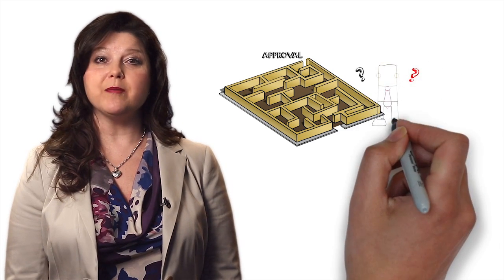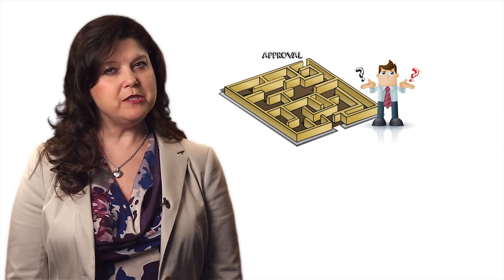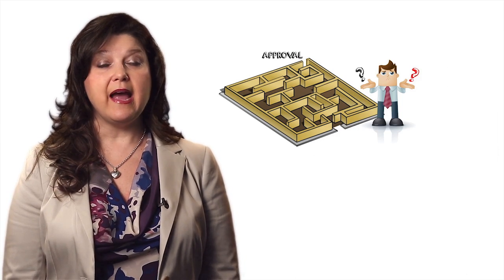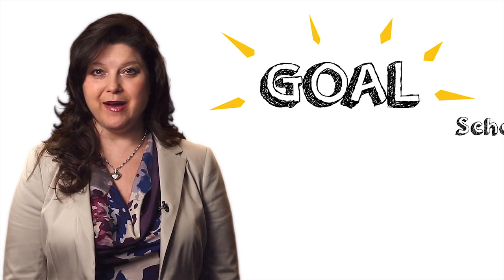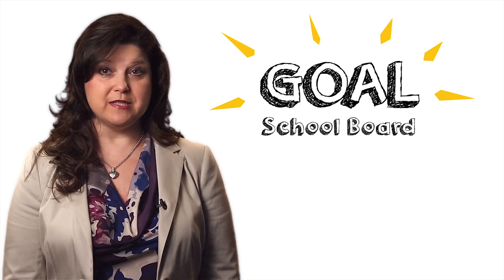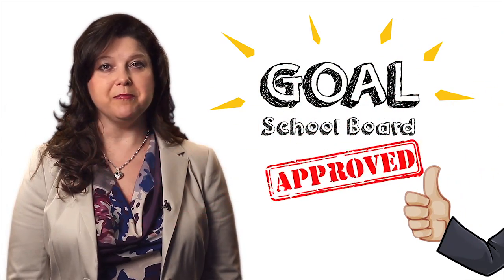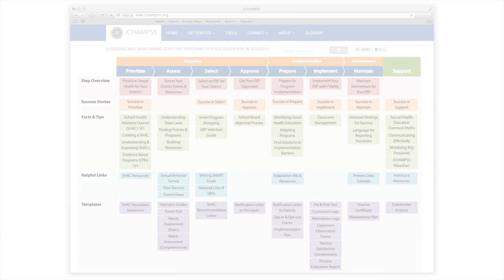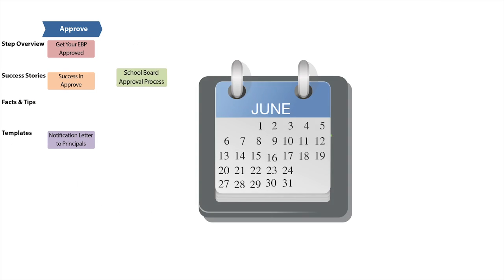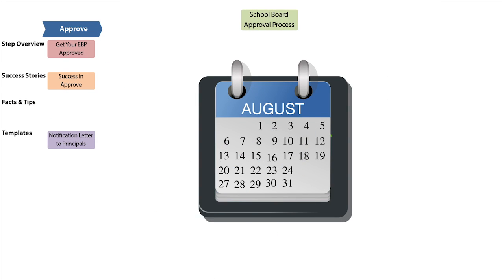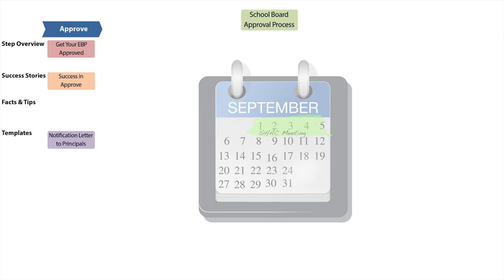It's time to present the SHAC recommendation to the School Board. Do you know how this process works, and the best way to do this to maximize success? That's what the Approved Step is all about. Your goal for the Approved Step is to get your program approved by your School Board. This can take time and effort, but iChamps can assist you. The iChamps School Board Approval Process Facts and Tips will explain the general process by which districts obtain school board approval.